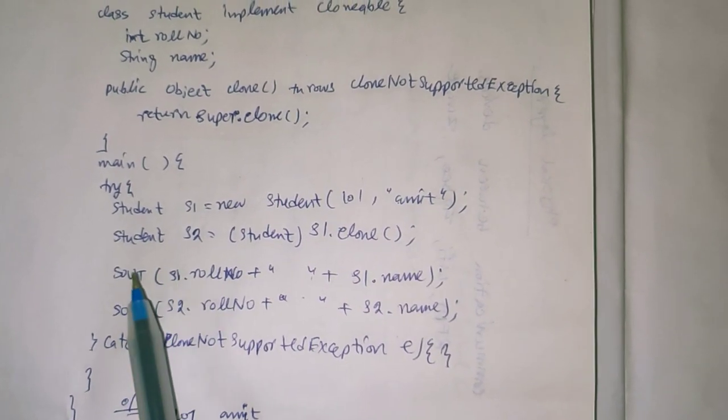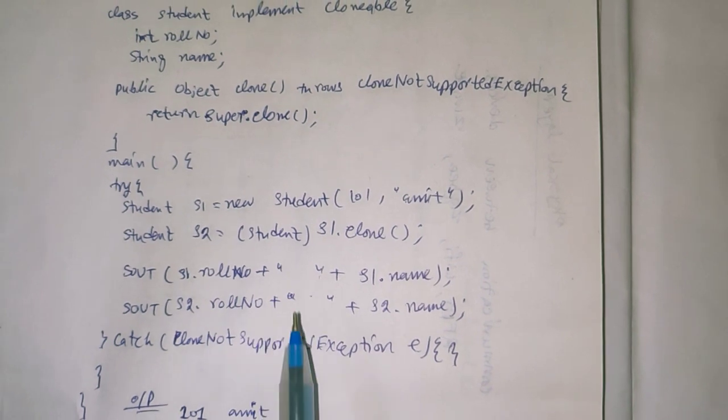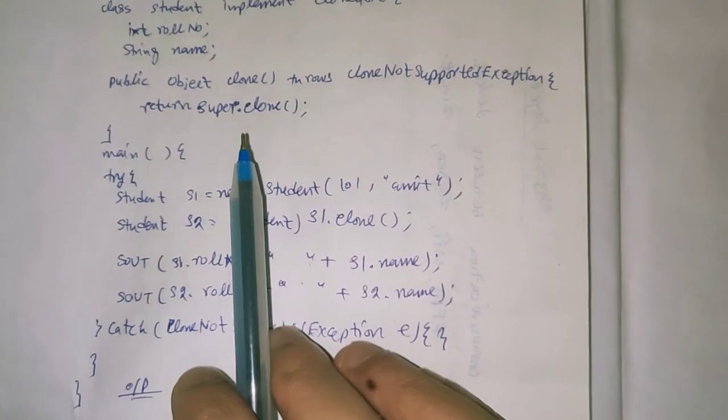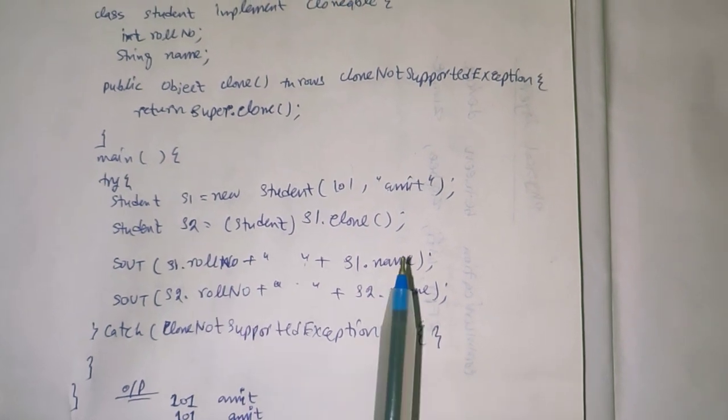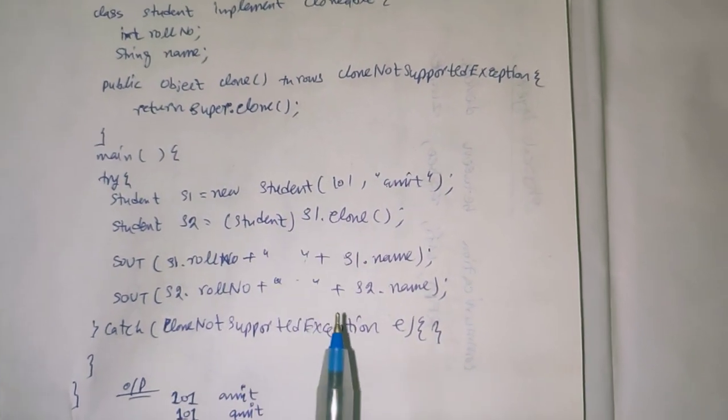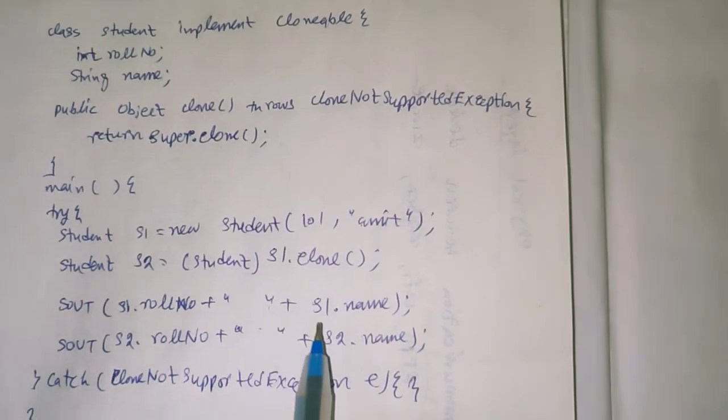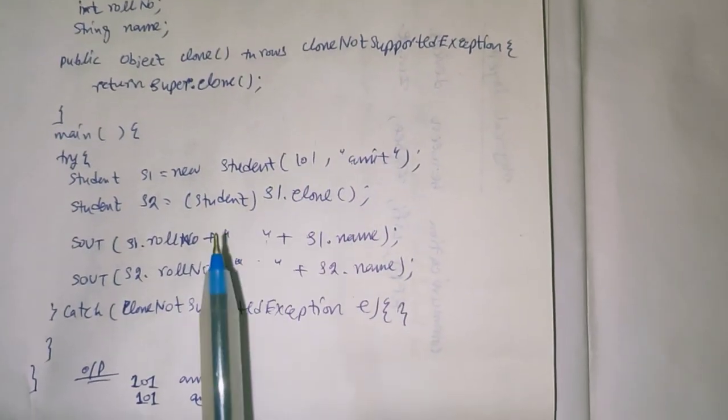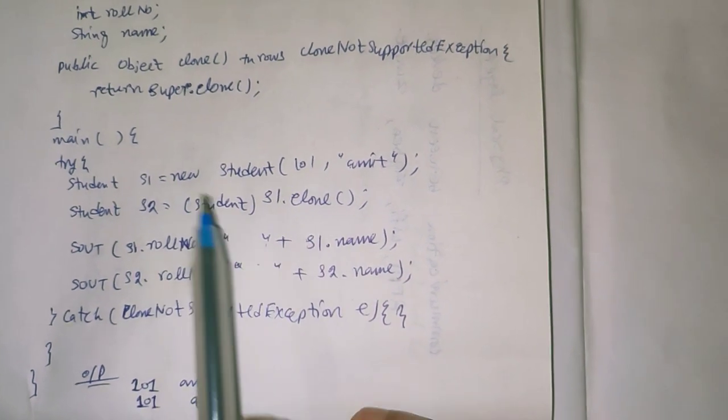System.out.println will print s1.rollnumber and s1.name. Second is s2. s2 roll number will be printed and name will be printed. But what is s2 roll number? Whenever you are cloning that method means copying the object.